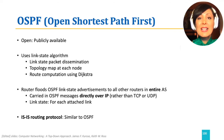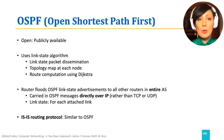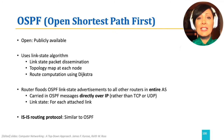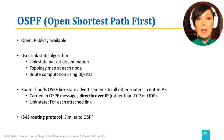OSPF uses a link-state algorithm. Nodes advertise link-state within the network by flooding it with link-state packets from every node when they join the network, when they have a link-state change, or periodically to maintain state. OSPF runs Dijkstra's algorithm to find the least-cost path and maintain the topological map of the network at each node.